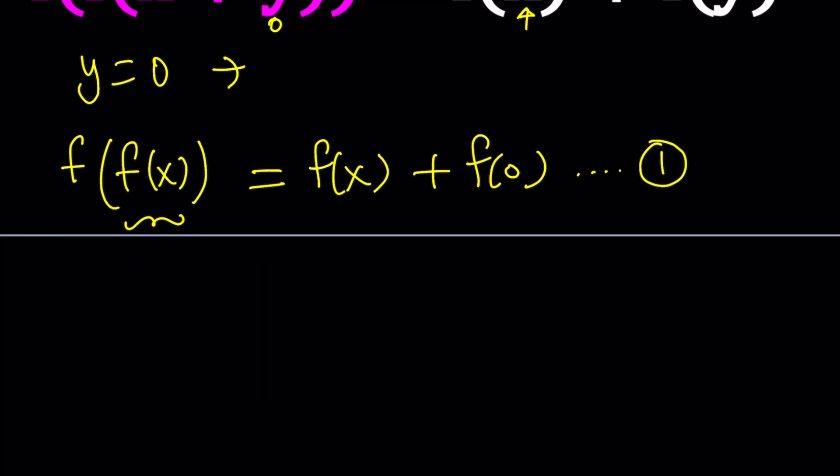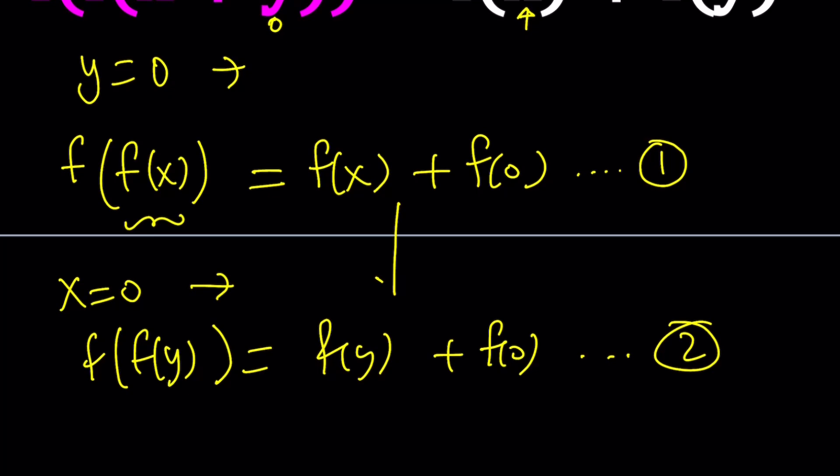We can do the exact same thing for x equals 0. If you replace x with 0, you get the exact same thing, but this time you have y instead of x. Because of the symmetry, you get another equation, but you could also get the second equation from the first one just by replacing x with y. Obviously, that makes sense because replacing y with 0 and then replacing x with y turns out to be the same thing.